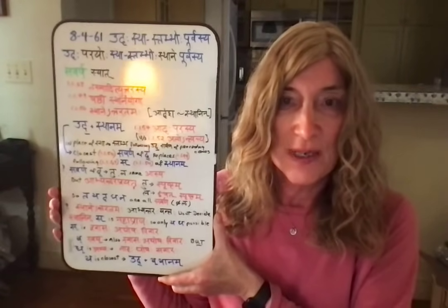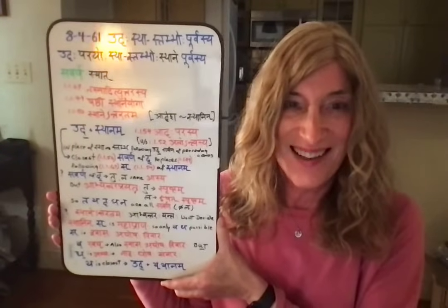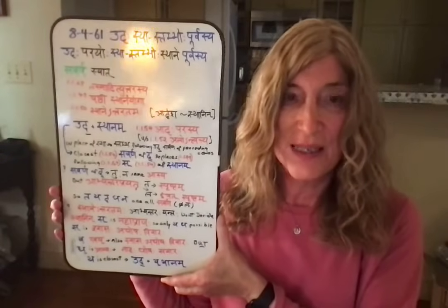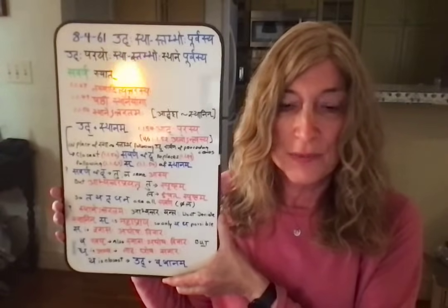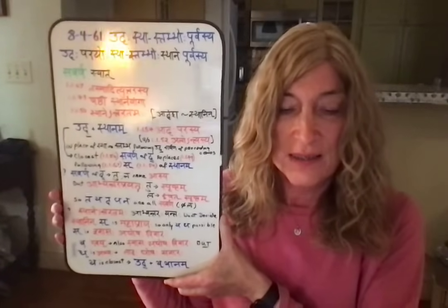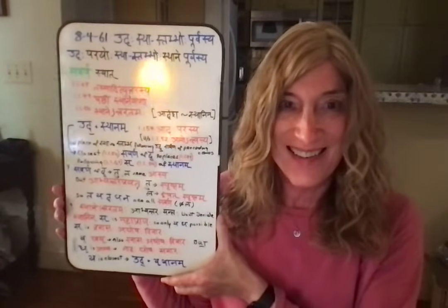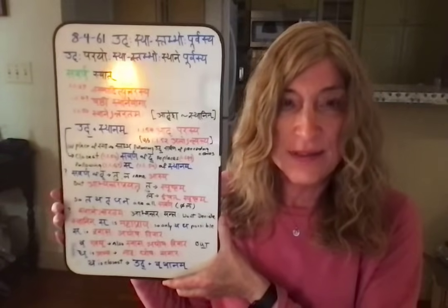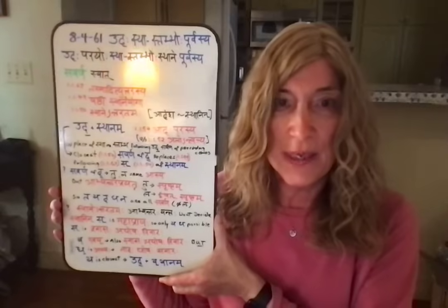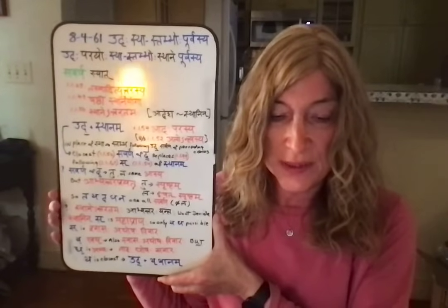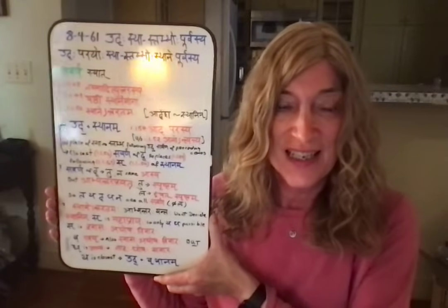There's one more very important and powerful sutra: sthānetaratamaḥ. This is the time to introduce or reintroduce two terms: ādesa and sthānin. The sthānin is the thing being replaced and the ādesa is the substitute, the one that replaces it. Sthānetaratamaḥ says that the ādesa, the substitute, shall be the closest one to the one being replaced. And that's where we get to the nitty-gritty of the choices.